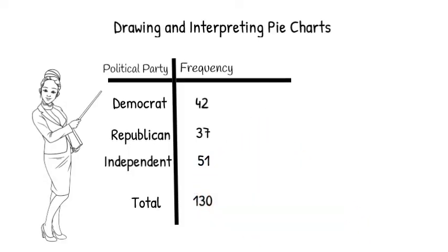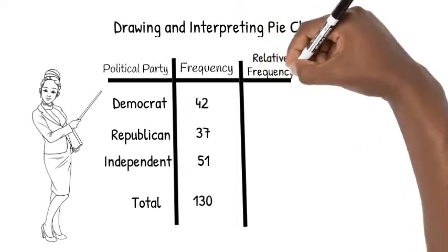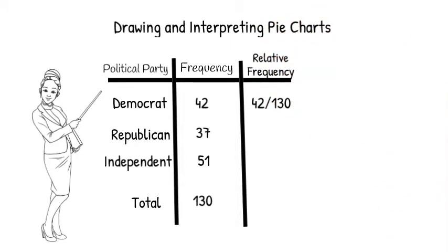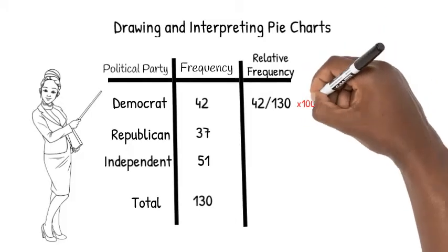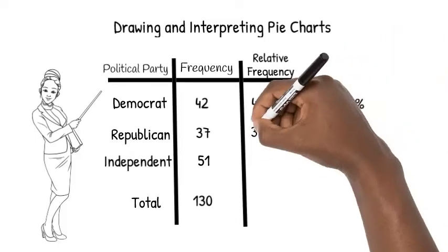A pie chart is a visual display which shows the portion of cases in each category. To figure out each portion, you may recall that we need to find the relative frequency by dividing each frequency by the total and multiplying by 100 if we want those portions as percentages.